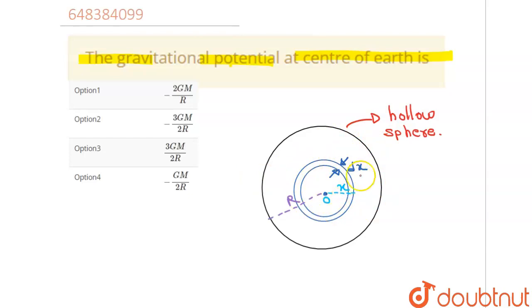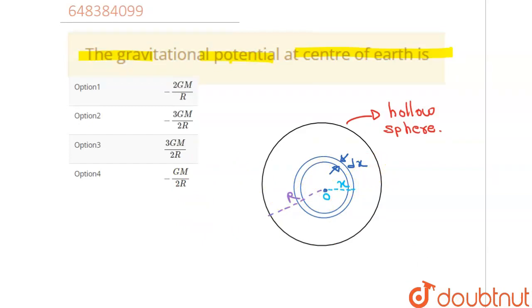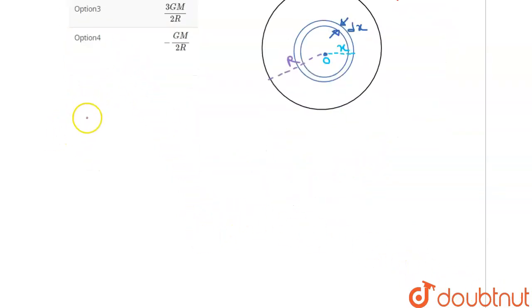So first the general formula we must be knowing: the potential for gravitational potential, that is V, equals negative of G m over r.